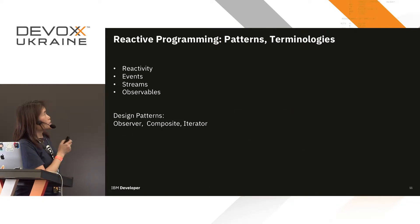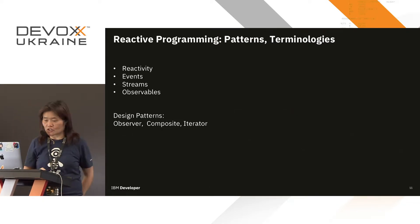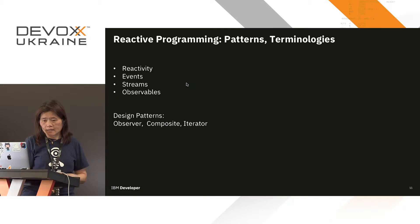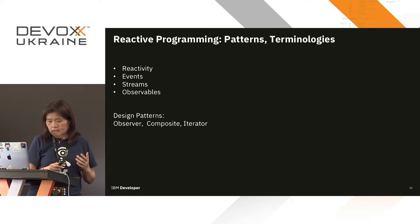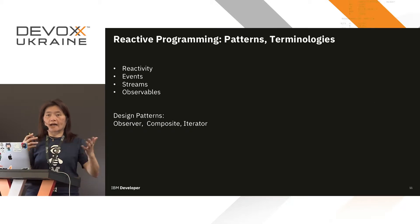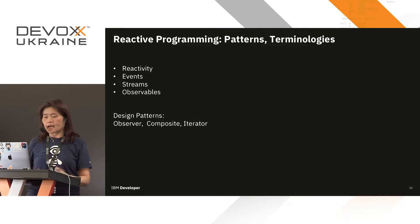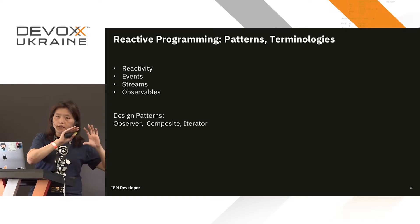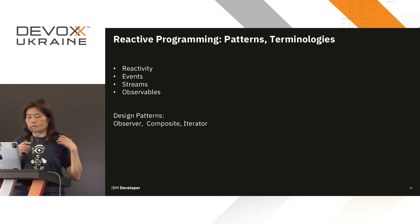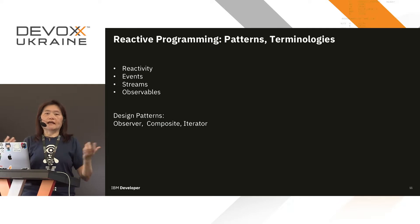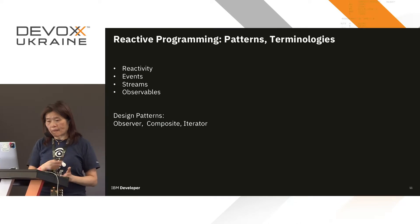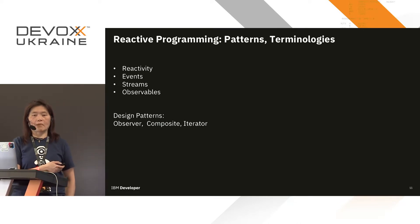Some basic terminology: reactivity is the process of responding to external stimuli and propagating events. Events themselves are stimuli that cause someone to respond. Streams are primitive representations of a sequence of data elements. Observables are streams of events. Design patterns used include observer pattern, and composite and iterator patterns.